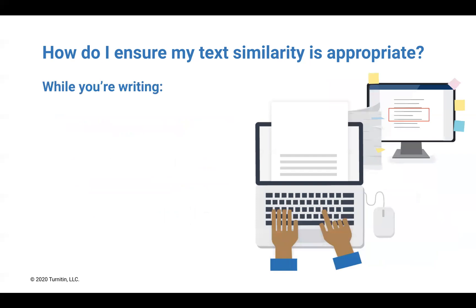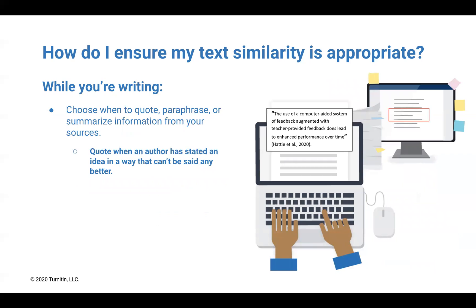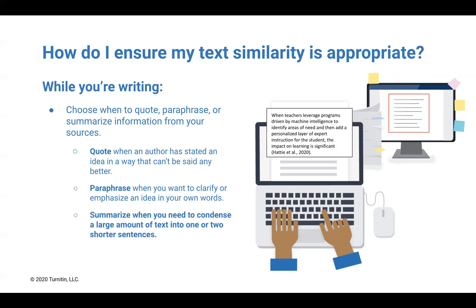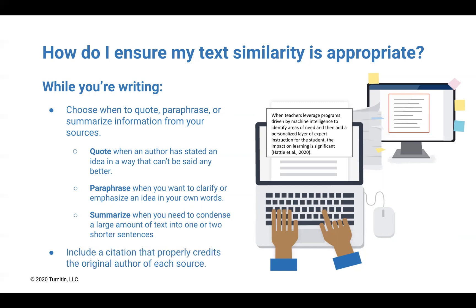While you're writing, consider when it is most effective to quote, paraphrase, or summarize sources. Quote when an author has stated an idea in a way that can't be said any better. Paraphrase when you want to clarify or emphasize an idea in your own words. Summarize when you need to condense a large amount of text into one or two shorter sentences. No matter which strategy you use, always include a citation in order to give credit to the original author.